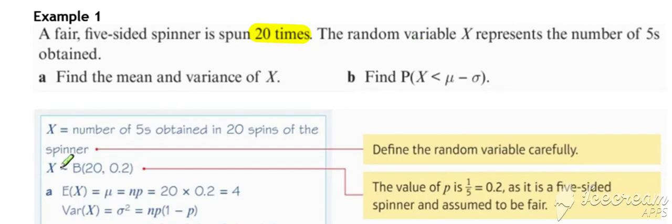So we've got a binomial n is 20, p is 0.2 and we've been asked to work out the mean and the variance.